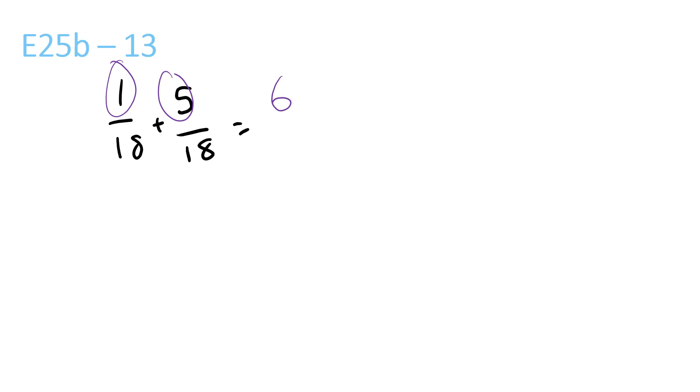1 plus 5 is 6 over 18. 6 goes into 18 and 6, and it's the highest number that goes into both of them. 6 divided by 6 is 1, 18 divided by 6 is 3. 1 third.